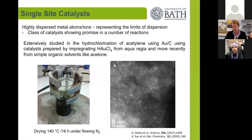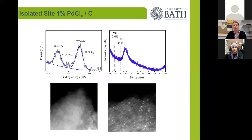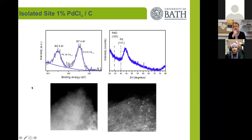We made a single-site palladium material simply by switching the gold chloride for palladium chloride. The material had many of the characteristics we were looking for: cationic palladium species as determined by XPS, no extended palladium crystallites by XRD, and microscopy showing no nanoparticle structures. This is a 1% loading palladium on carbon, with a scale bar of 20 nanometers. Zooming in further, we can see isolated metal species on the surface, with a scale bar of 1 nanometer.